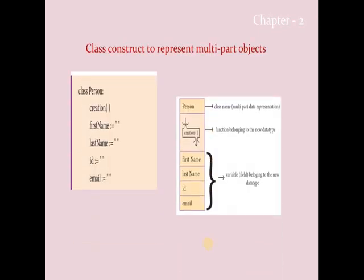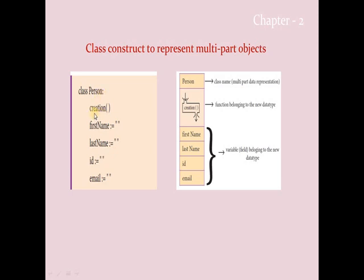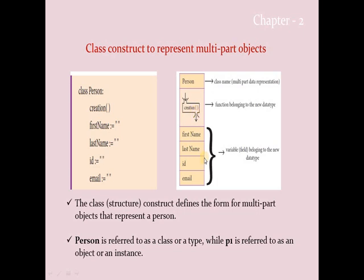Do you remember classes and objects in C++? The same concept applies here — defining a class with a class name, a member function called `creation`, and data members. For the `person` example: the class name is `person`, the member function is `creation`, and the data members are first name, last name, ID, and email. The class is referred to as `person` while `p1` is referred to as an object. To access content in a class we must create an object.